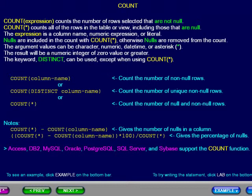The keyword DISTINCT can be used except when using COUNT asterisk. In the first format, we count the number of non-null rows. In the second format, we count the number of unique non-null rows. In the third, we count the number of null and non-null rows.